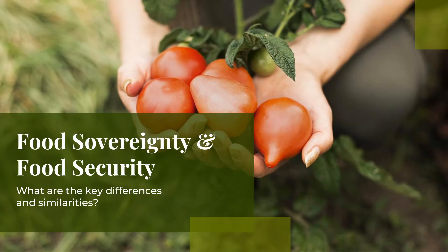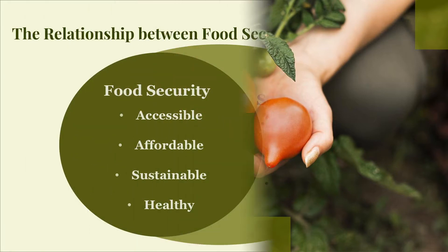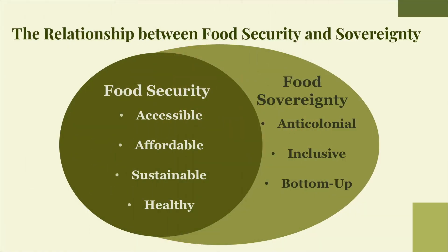Now that we have discussed food justice, let's look at key differences between two ways that food injustice has been addressed: food security and food sovereignty. From this diagram, we can see that there is some overlap between food security and food sovereignty. Both prioritize food being accessible to everybody, as well as affordable and sustainably sourced.